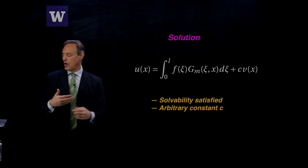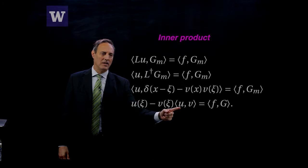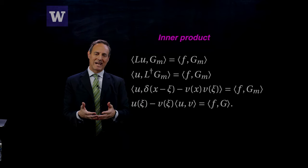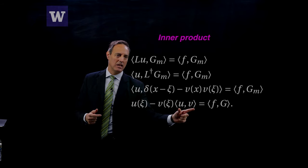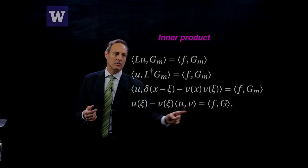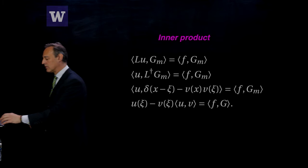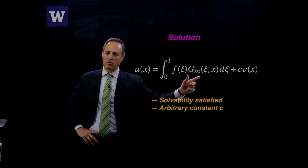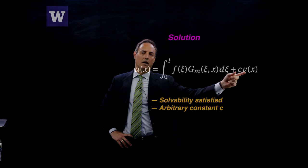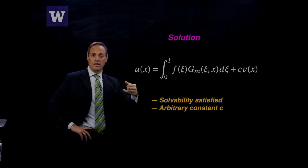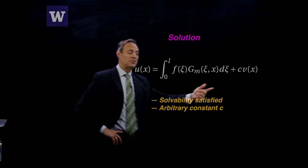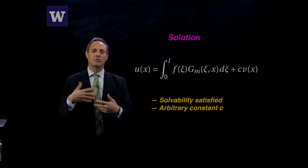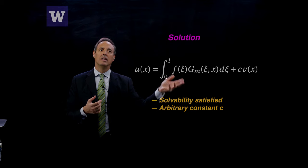So my solution looks like: I still have the normal Green's function term, plus V(x) floating around with some weighting — just some arbitrary constant — because I have this null space and can add any amount of it and still have a solution. The inner product of F against the modified Green's function gives the particular part. Overall, U(x) equals the integral of F against the modified Green's function, plus some arbitrary constant times the null space function. I've satisfied the solvability conditions, and this arbitrary constant C is exactly expected because the null space can be added to any solution.